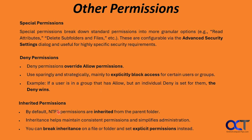By default, NTFS permissions are inherited from the parent folder. If you set a permission level on a folder and then create subfolders and files, they'll inherit whatever access levels you gave to the parent folder. New folders created within another folder automatically inherit those permissions, as do files. This helps maintain consistent permissions and simplifies administration. However, you can break inheritance on a file or folder and set explicit permissions instead — for example, if a specific user needs special access different from everyone else.